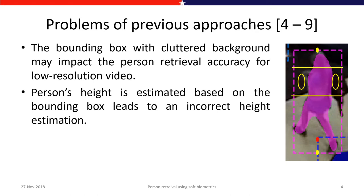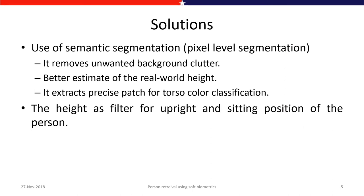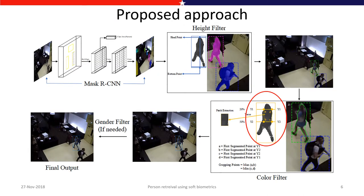Such problems can be resolved with semantic segmentation within the bounding box, which removes unwanted background clutter and allows better estimates of real-world height. It also helps extract precise patches from the torso for color classification. We also use height as a filter to separate persons in upright versus sitting positions — standing persons can be filtered from the surveillance frame using height estimation.